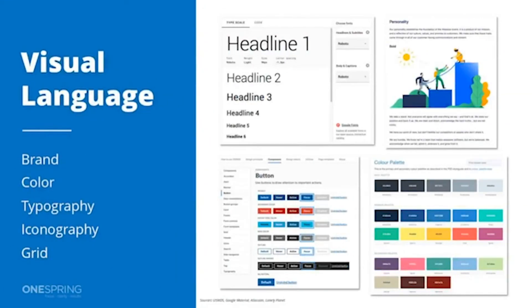In addition to design principles, another foundational element is creating your visual language. This typically starts from your organization's brand standards guide, but unlike a brand standards guide, a design system is more tactical — it not only tells you but shows you and actually gives you the code and assets you need to implement.